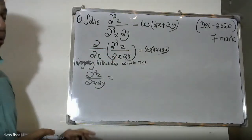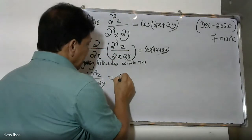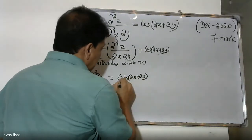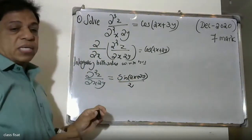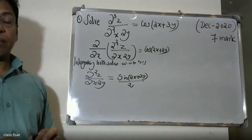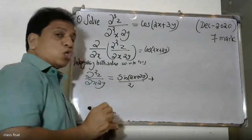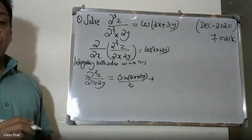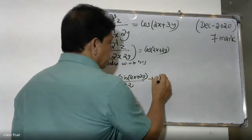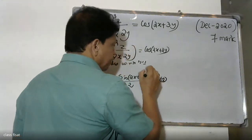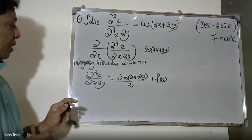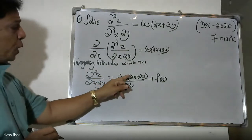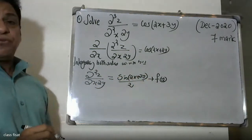Right-hand side: cos(2x + 3y). We will integrate to get sin(2x + 3y) divided by 2. Sin(2x + 3y) divided by 2, plus a constant. Since y is treated as a constant, we add an arbitrary function f(y). Therefore, dou z by dou y is equal to sin(2x + 3y)/2 plus f(y).